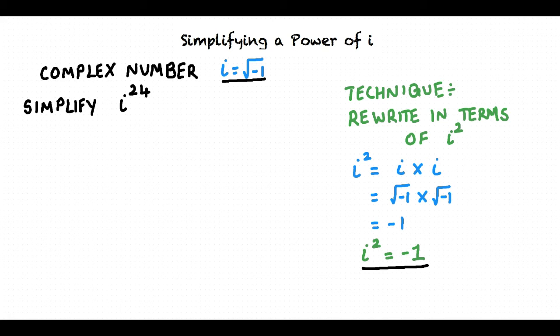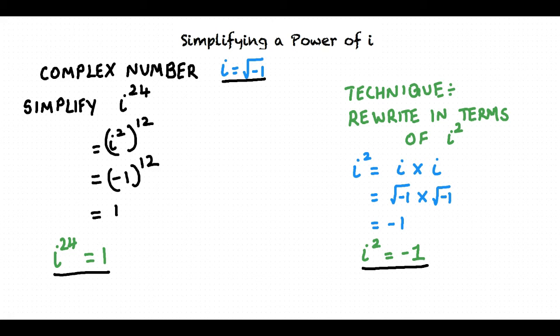Coming back to our example, we can write i to the power 24 as i squared raised to the power 12, using the power of a power rule. Replacing i squared with negative 1, we get i to the power 24 equals negative 1 raised to the power 12, which equals 1. The simplified form of the expression i raised to the power 24 is 1.